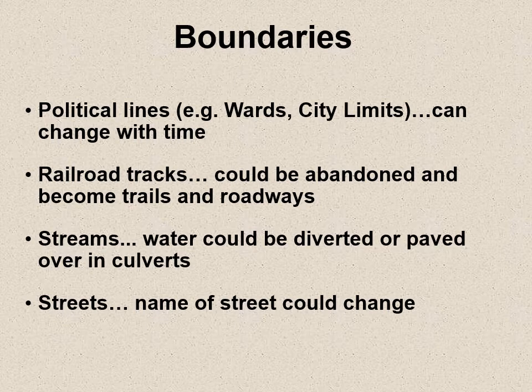Boundaries are important, and boundaries can be political lines, but they can change with time. If you're looking at these boundaries in 1950 and trying to figure out where they are in 2021, it may not be easy. Railroad tracks can be a boundary but can be abandoned and become bike trails. Streams could be a boundary but could be diverted or paved over in culverts. Streets obviously could be boundaries, but street names also can change over time. There's a certain amount of variability you have to understand.